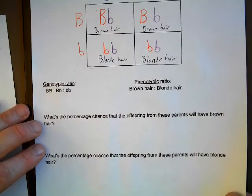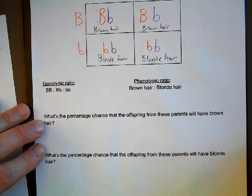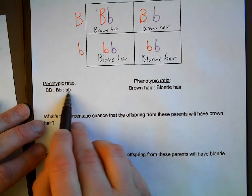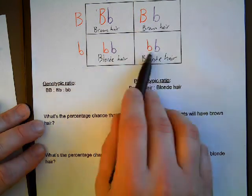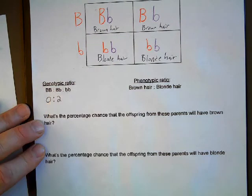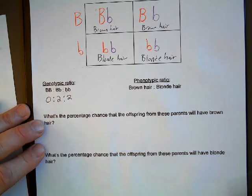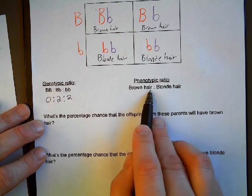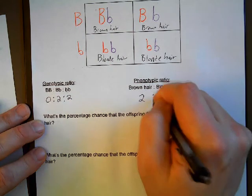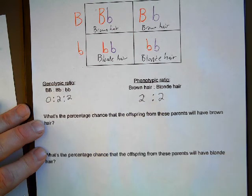Now I have my Punnett square filled in, so I can answer these questions. For the genotypic ratio — looking at homozygous dominant to heterozygous to homozygous recessive — I don't see any homozygous dominant, so zero. Out of the four possible combinations, two of them would be heterozygous capital B lowercase b, and two of them would be lowercase b lowercase b. So my genotypic ratio would be zero to two to two. The phenotypic ratio is dominant to recessive — brown hair to blonde hair. Two of the possible four combinations would give brown hair, and two would give blonde hair, so the phenotypic ratio is two to two.